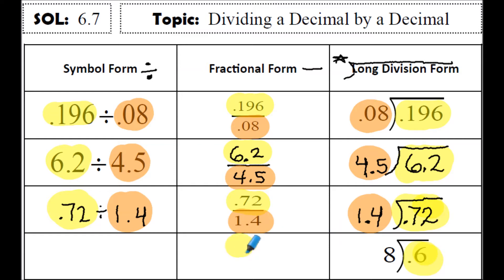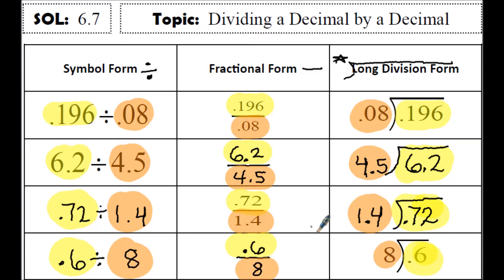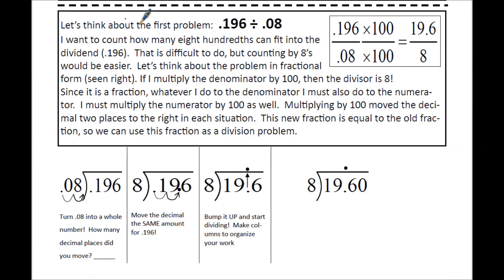Now, the first number is the number on the inside of the long division form, so 6 tenths should be in the numerator and should be listed first in the symbol form. The 8 on the outside will be the denominator, and listed second in symbol form.